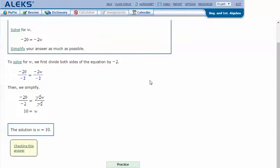To solve for W, we first divide both sides of the equation by negative 2 to get this W by itself so that it's one W or just W. And if I divide this side by negative 2, I have to divide this side by negative 2 also to keep this equal. And so negative 20 divided by negative 2 is positive 10.